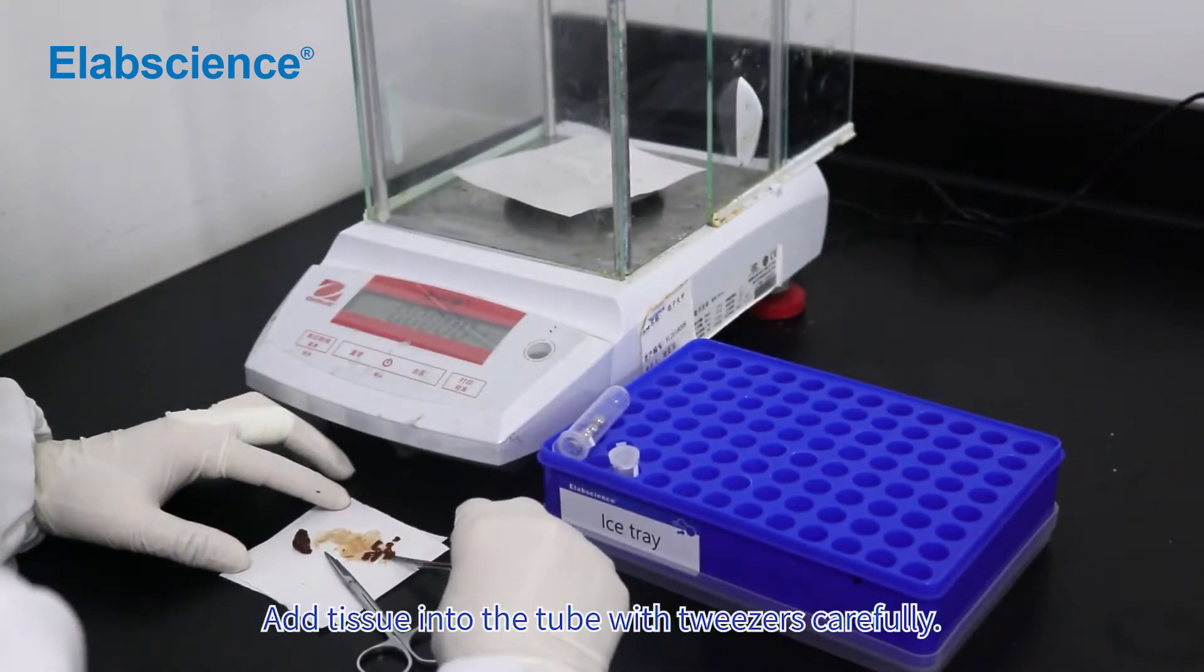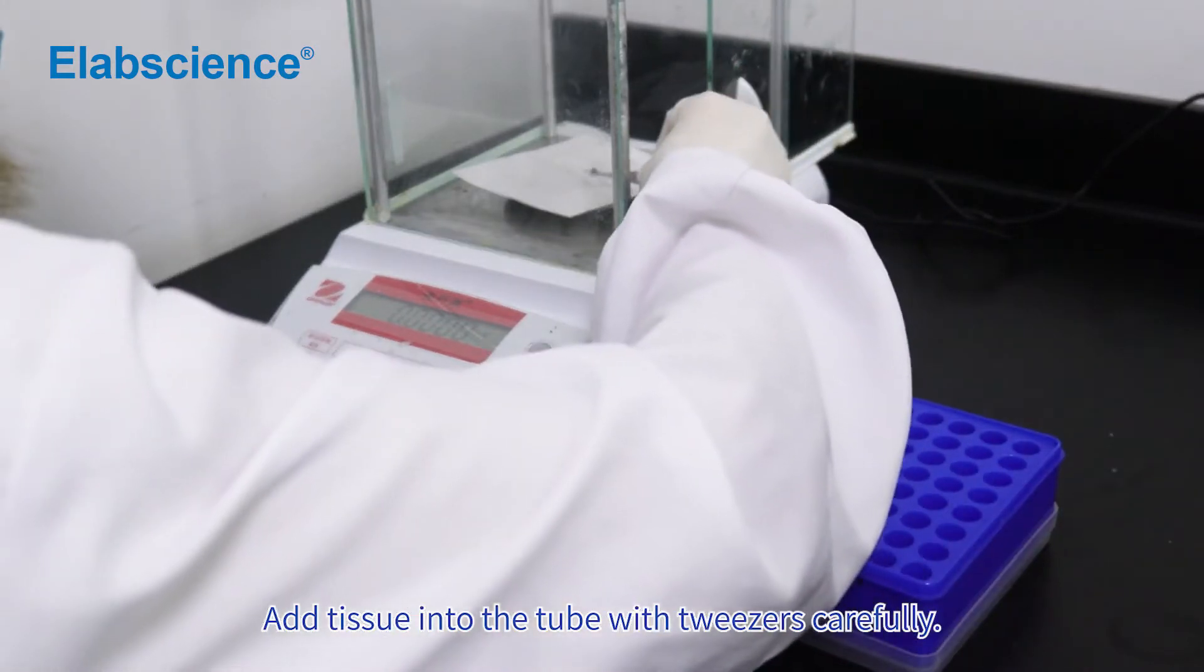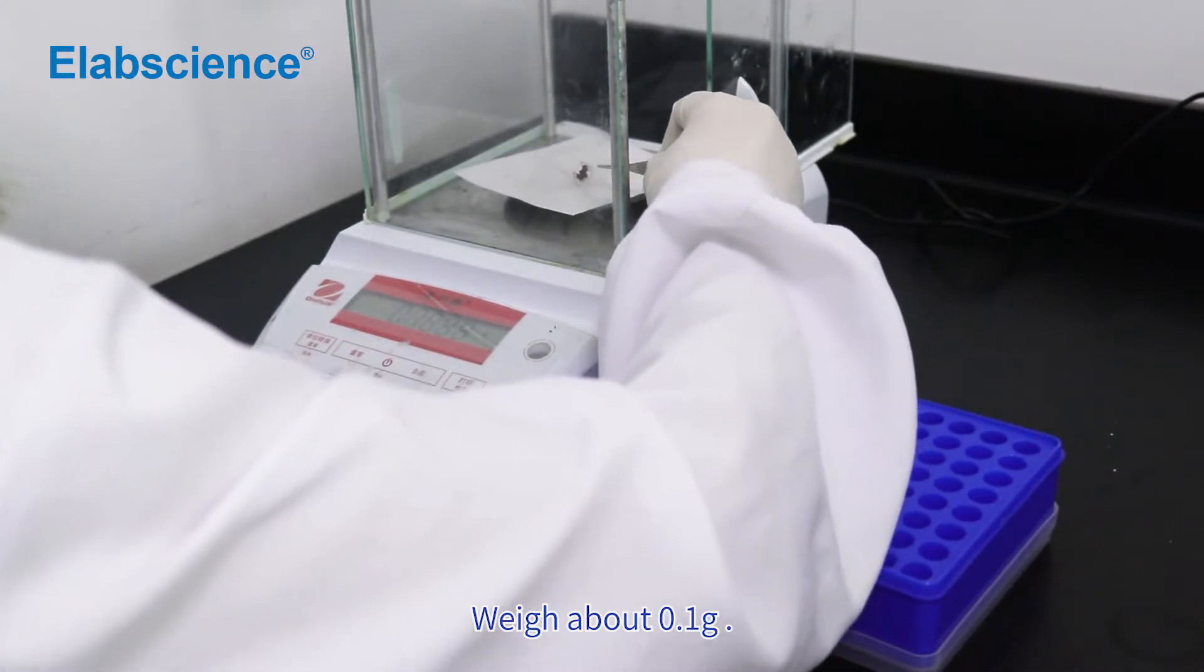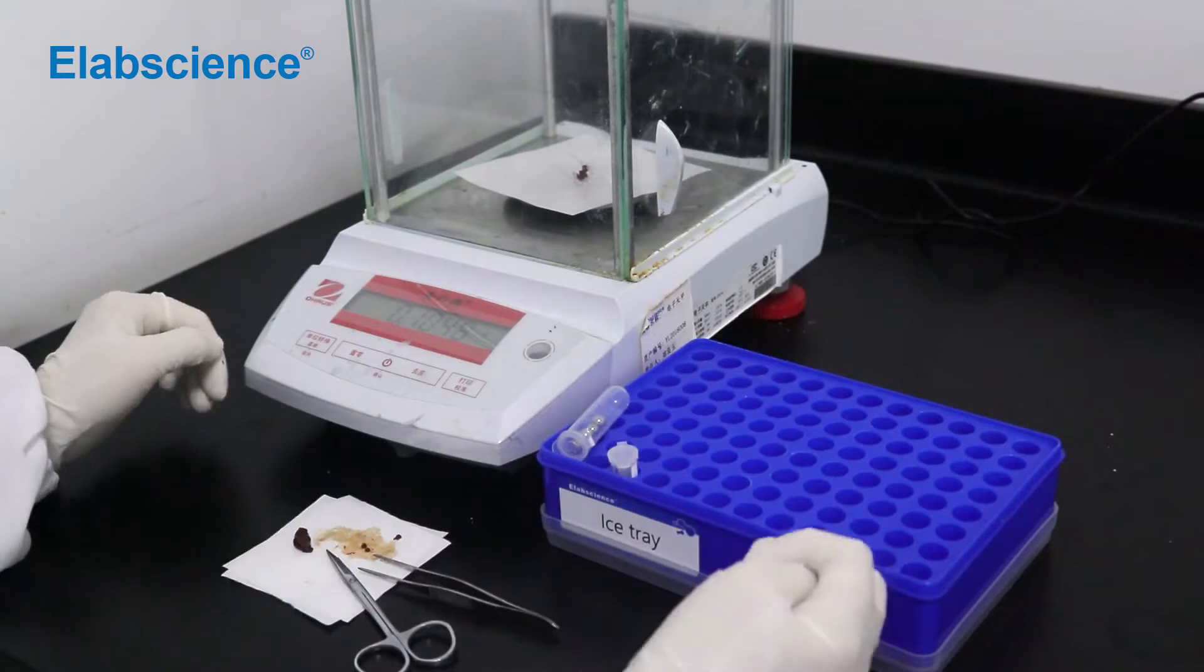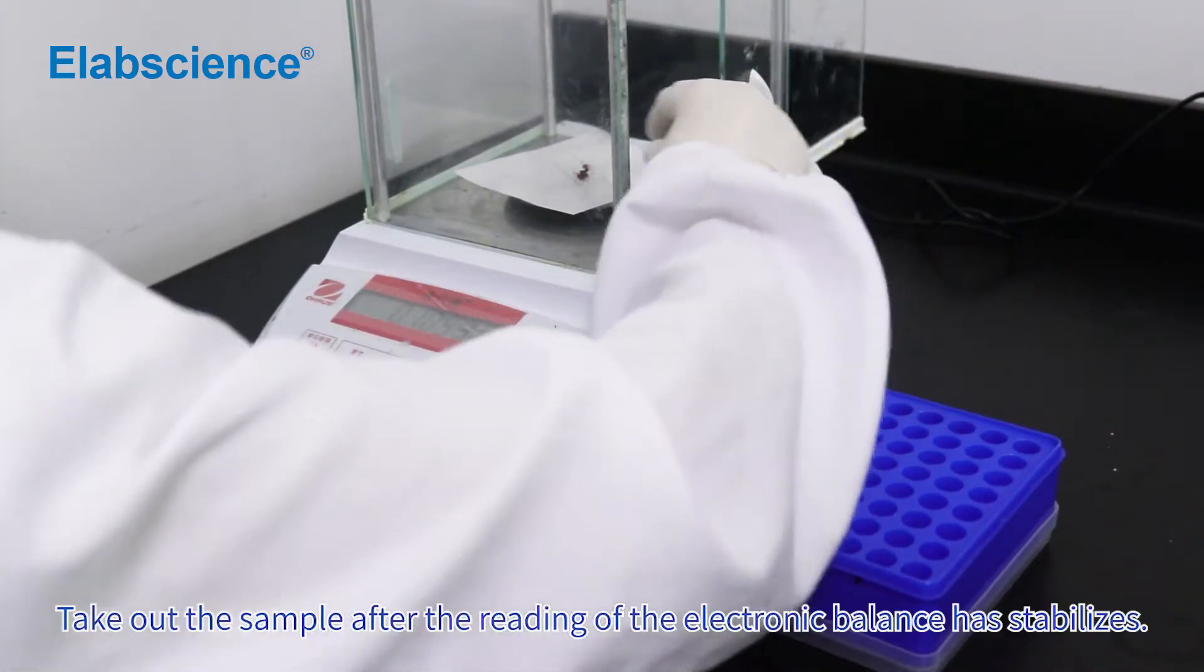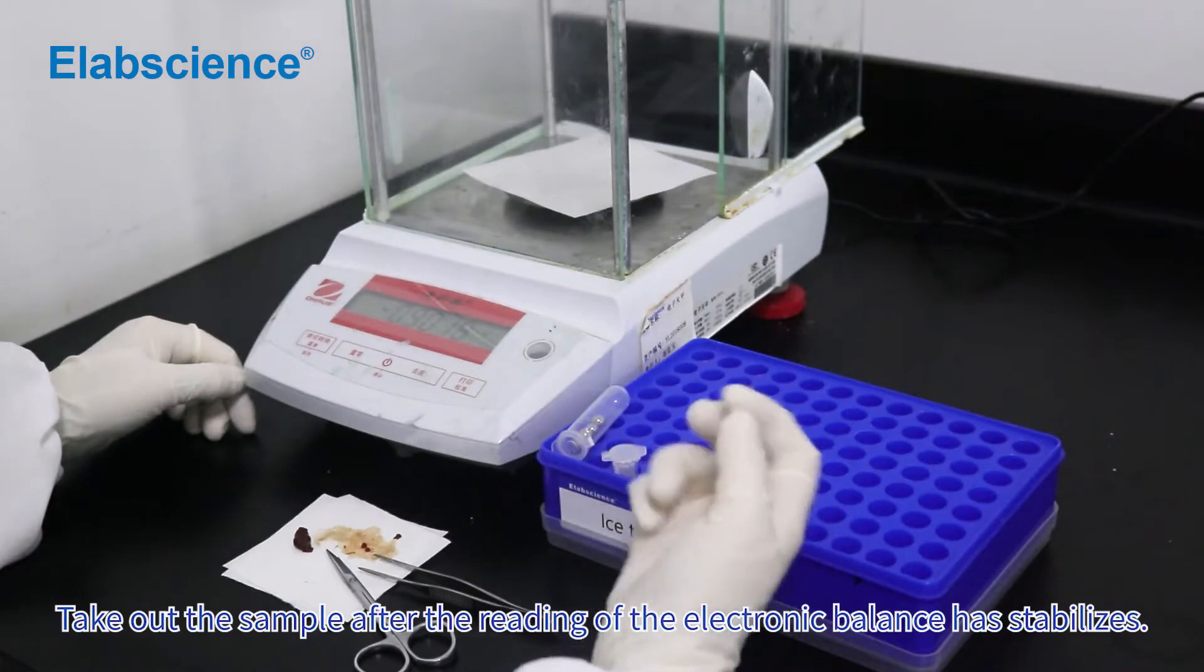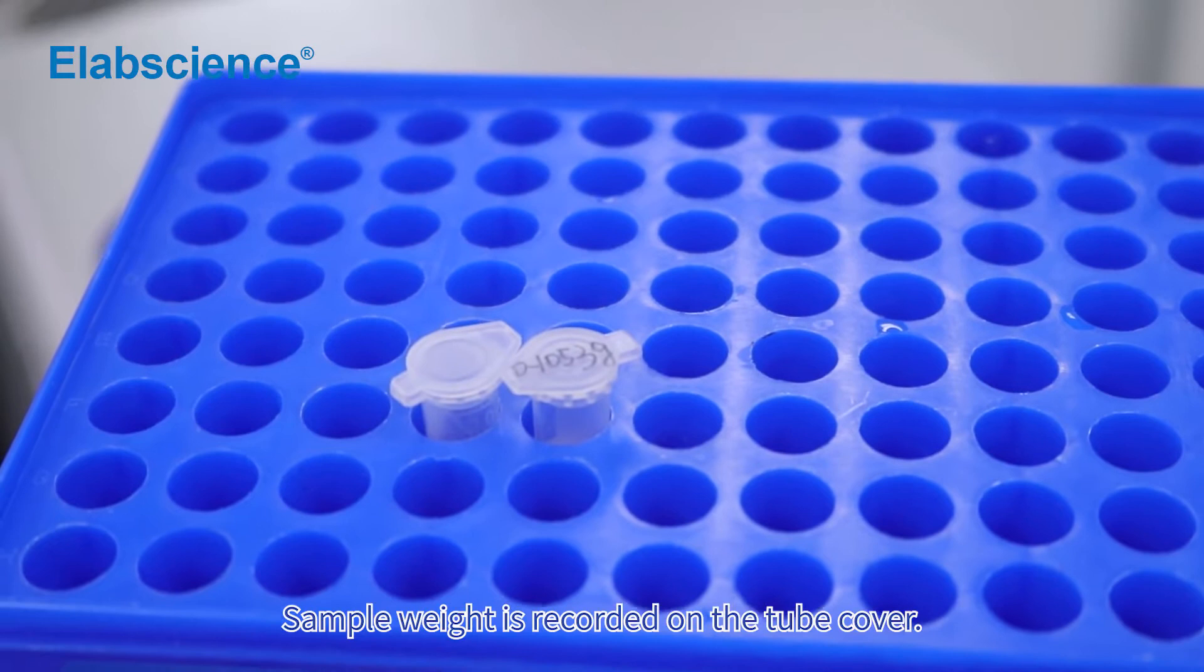Add tissue into the tube with tweezers carefully. Weigh about 0.1 grams. Take out the sample after the reading of the electronic balance has stabilized. Sample weight is recorded on the tube cover.